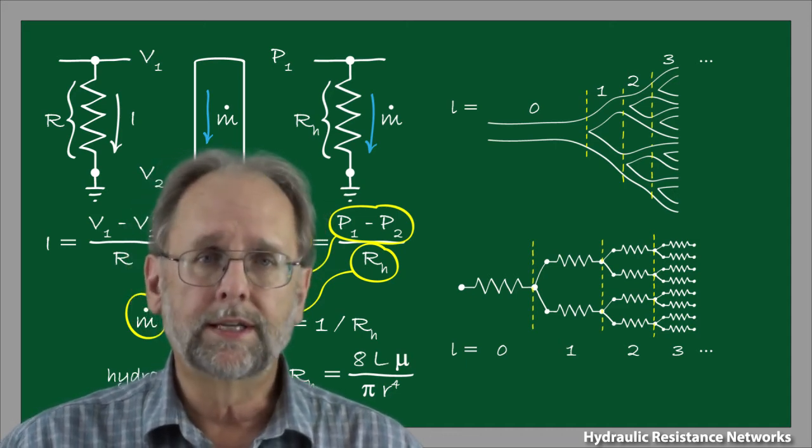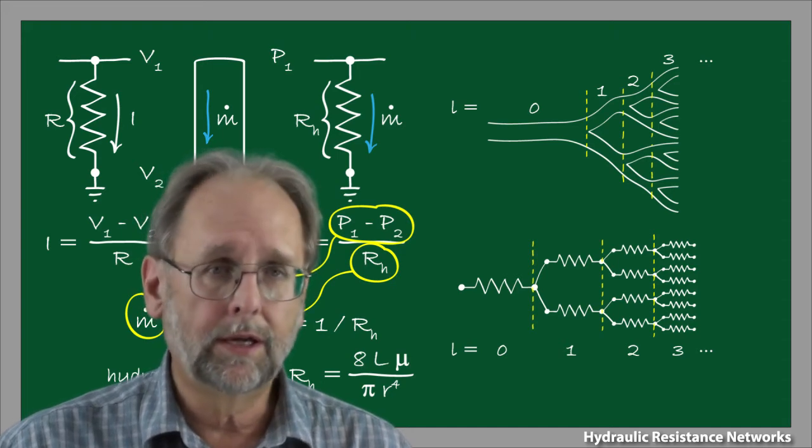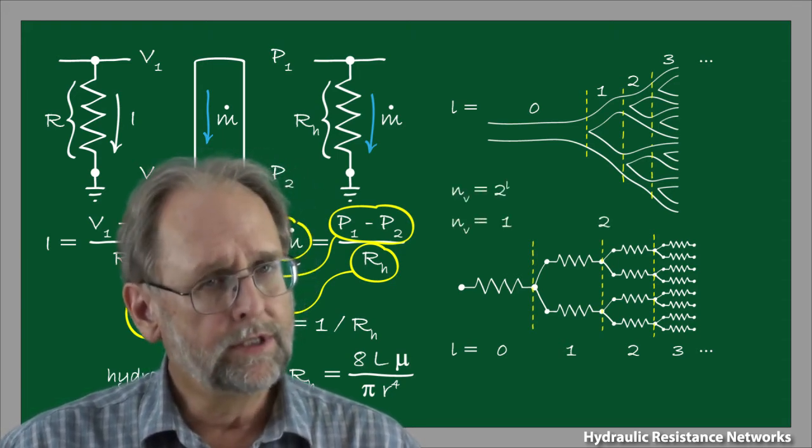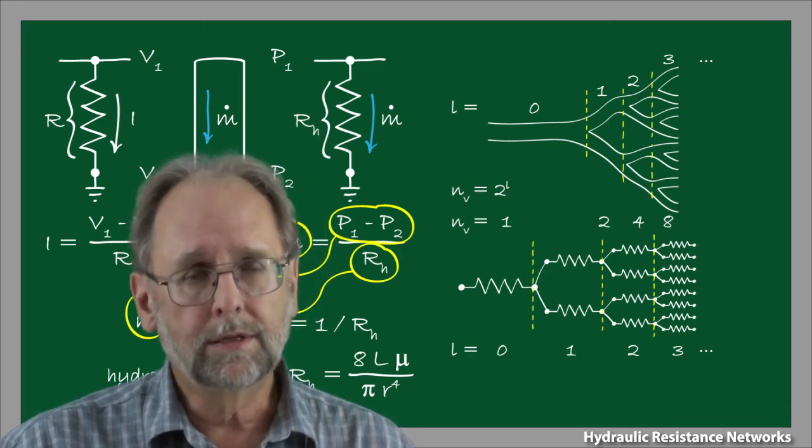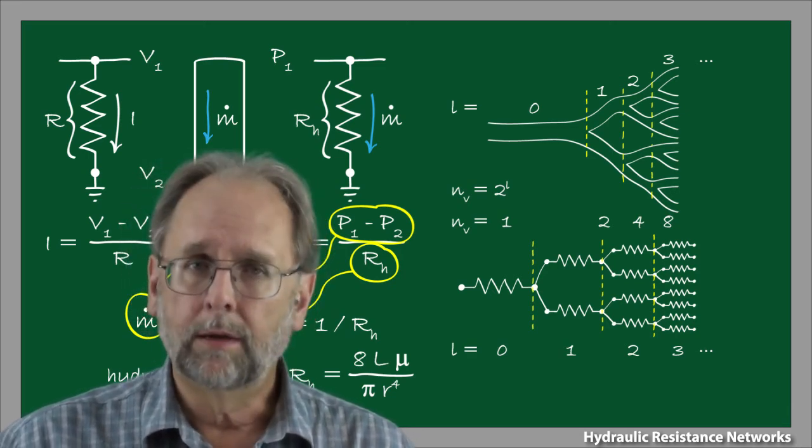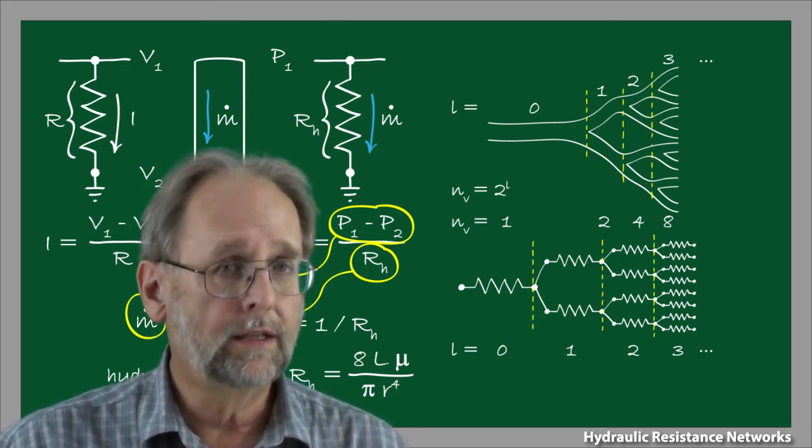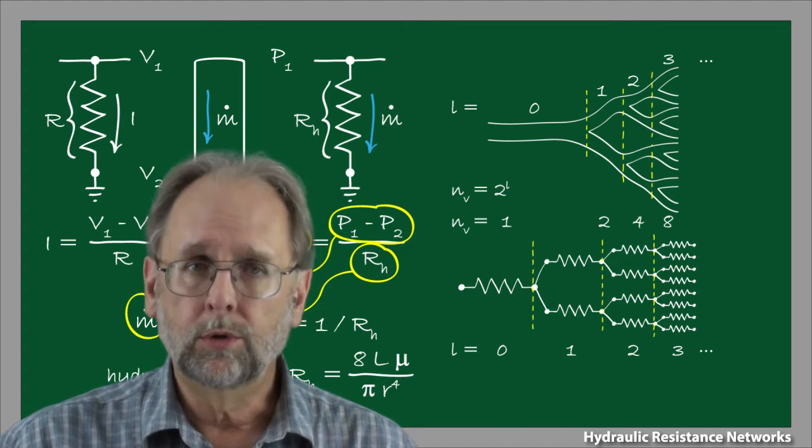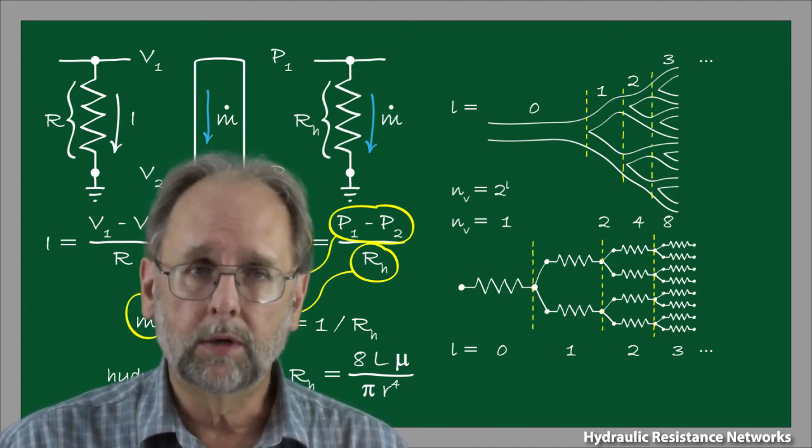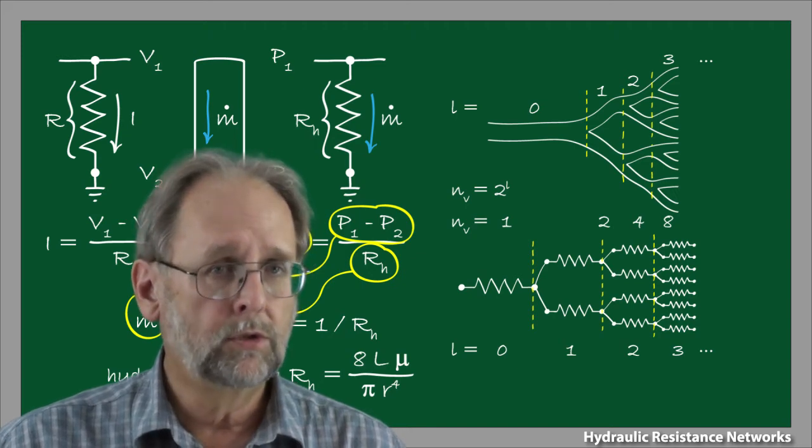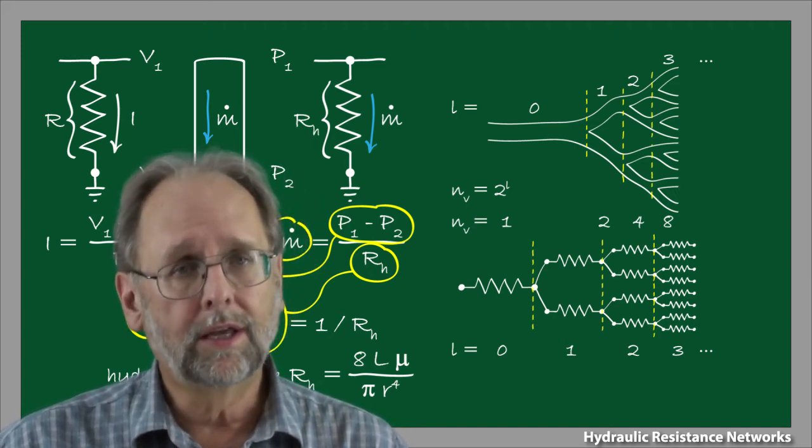The simple thing this lets us do is write an equation for the number of vessels in any particular branching level. Specifically, the number of vessels is equal to the number two raised to the power of the branching level. So, at branching level zero, there are two to the zero or one vessel. At level one, there are two to the one power, or two vessels, then two to the two power, two to the three power, and so forth, all the way until we get to the ultimate branching level, the capillaries.